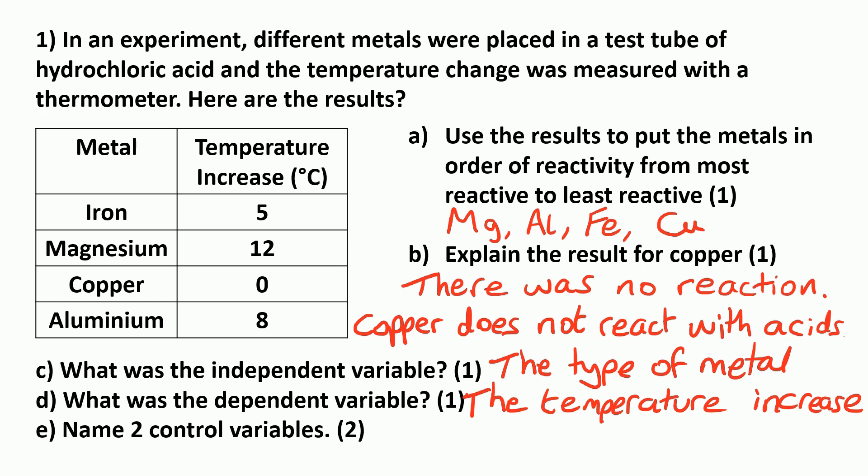So for this question, that would be the volume of acid, also the concentration of the acid, and the mass of the metal. You would also be allowed the same starting temperature of the acid at the start of the experiment.